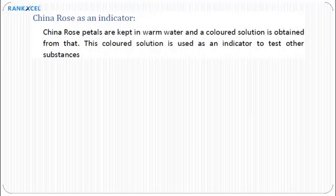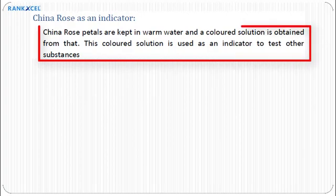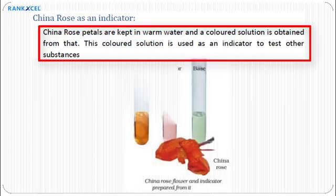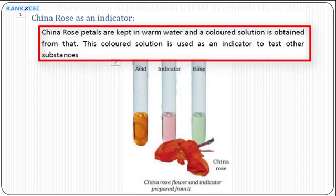China rose as an indicator: China rose petals are kept in warm water and a colored solution is obtained. This colored solution is used as an indicator to test other substances.